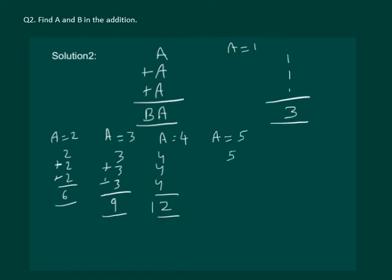We get 5 plus 5 plus 5 will give us 15. Clearly for A equal to 5 all the conditions are satisfied. We are getting a 2 digit number and in ones place we have A itself. We can say that A equal to 5 and B equal to 1 is the required solution.